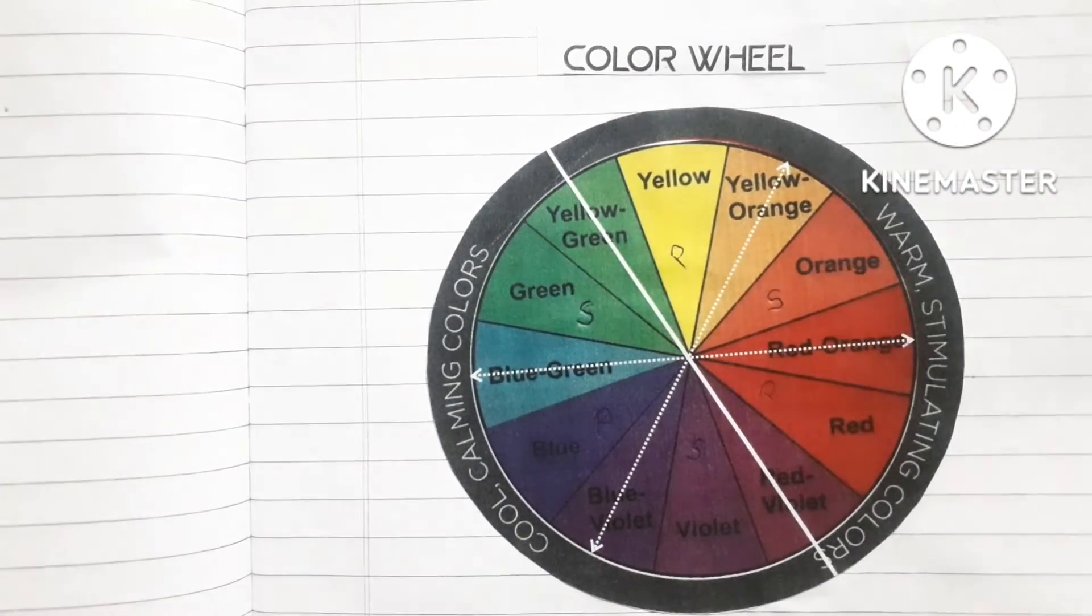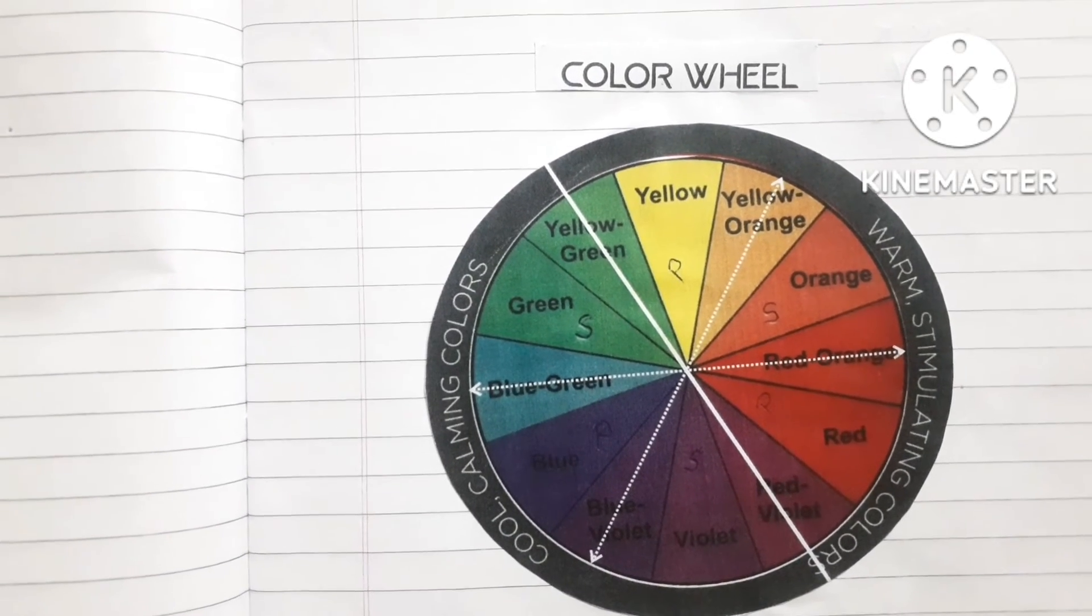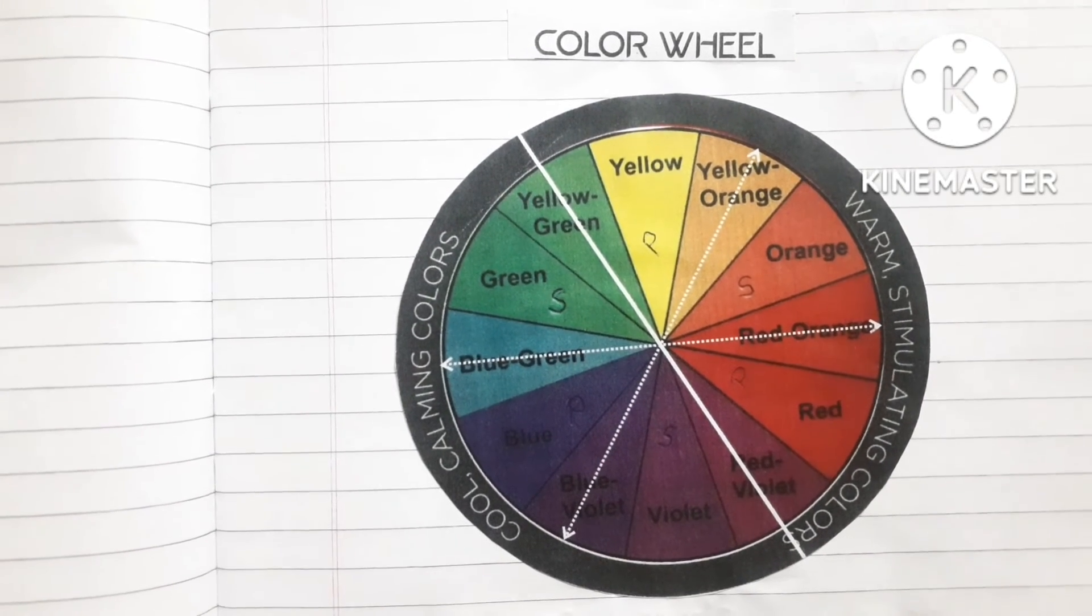So we will take orange color, we will add a little yellow, so it will become another color. So what do we also say? Tertiary colors, right? So I hope that it will be understood.